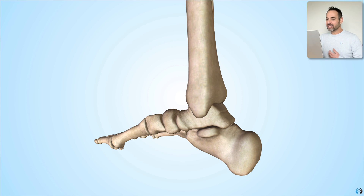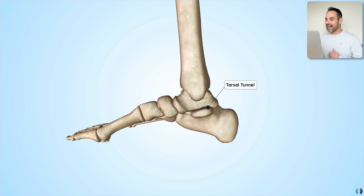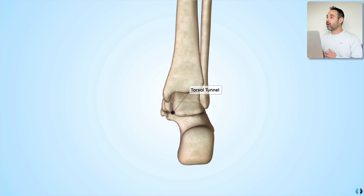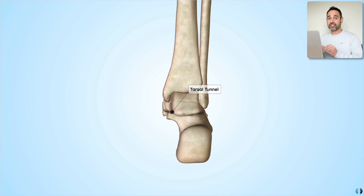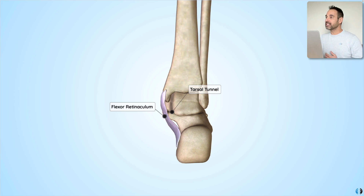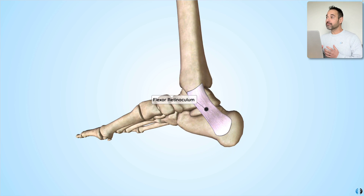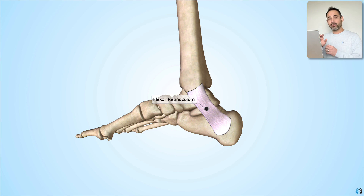The tarsal tunnel is a narrow passage located on the medial side of the ankle between the tibia and the calcaneus. It's important because there are a number of structures that run through it. The tarsal tunnel is roofed by a piece of soft tissue called the flexor retinaculum, which acts as a protective layer to allow those structures to run through the tarsal tunnel.